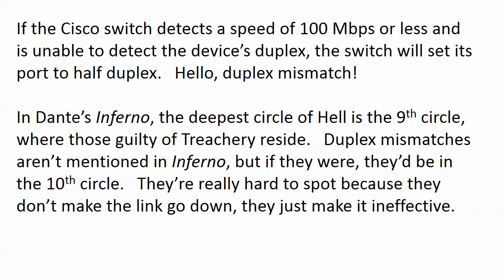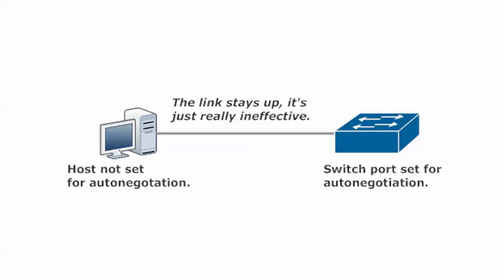How bad can a duplex mismatch be? It can be really bad. In Dante's Inferno, the ninth circle of hell was the deepest circle — duplex mismatches would be in the tenth circle if they were in there, because they're hard to spot. They don't make the link go down; they just make it really ineffective. That's important enough that I've said it twice — once on the previous screen and once on this one.